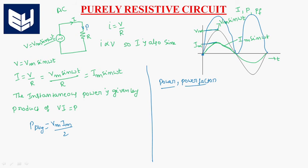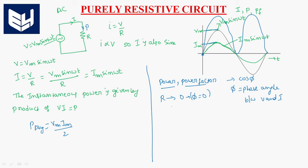Power factor is nothing but cos φ, where φ is the phase angle between voltage and current. In case of a pure resistive network, the phase angle difference between voltage and current is 0. So φ = 0, and whenever φ = 0, cos φ = 1.